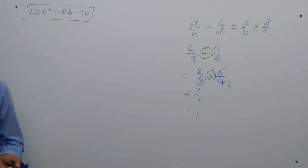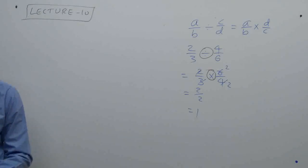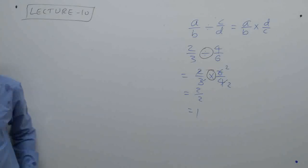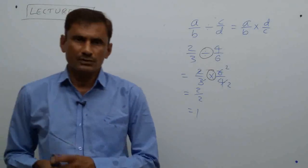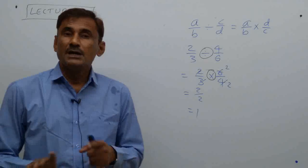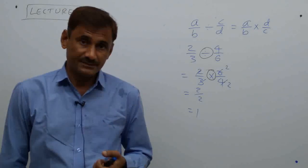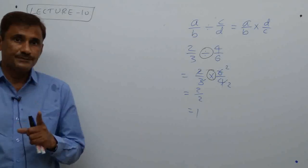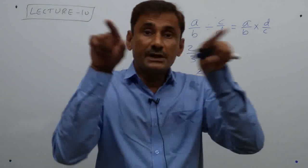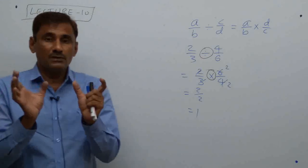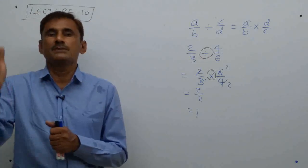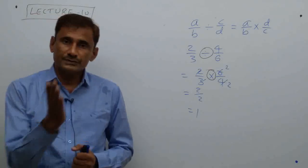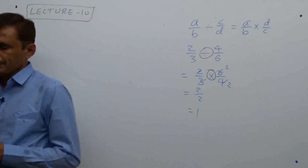First property: when a rational number is divided by another rational number, the quotient is also rational — this is the closure property. Closure property in division applies for rational numbers only, not for natural numbers, whole numbers, or integers. So among all sets, only rational numbers satisfy the closure property under division.